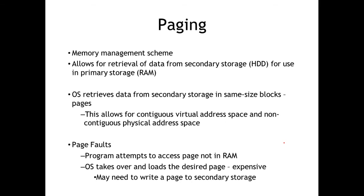Paging is a memory management scheme. Its primary purpose is to allow retrieval of data from secondary storage — something like a hard drive — for use in primary storage, our RAM. It allows swapping: if we run out of physical RAM, we can start seeing page-ins and page-outs. That is, we need to take some chunk of memory — some address space in physical RAM — and move it to a secondary storage device like a hard drive, in order to allow something else to be moved into primary storage.